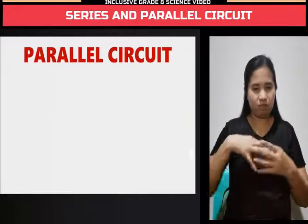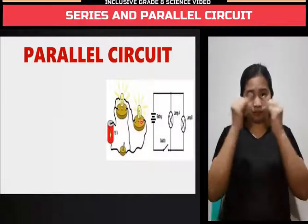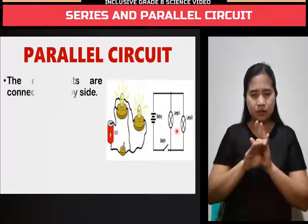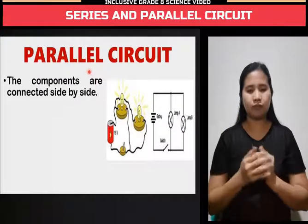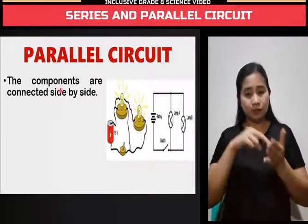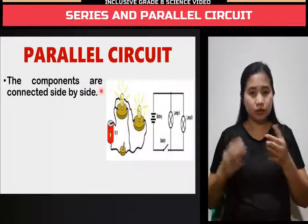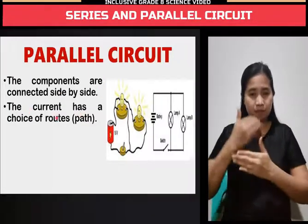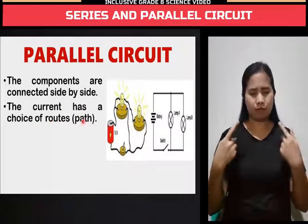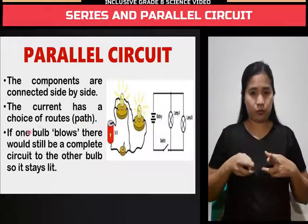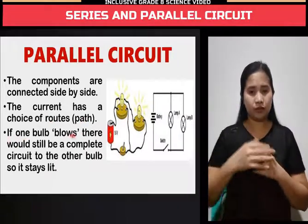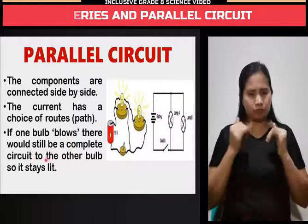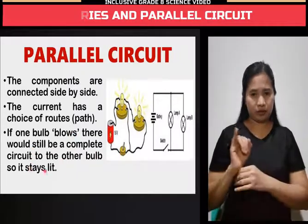Parallel circuit. Again, this is the picture and this is the schematic diagram. Here are other definitions. The components are connected side by side. Next, the current has a choice of routes or paths. Next, if one bulb blows, there would still be a complete circuit to the other bulb, so it stays lit.